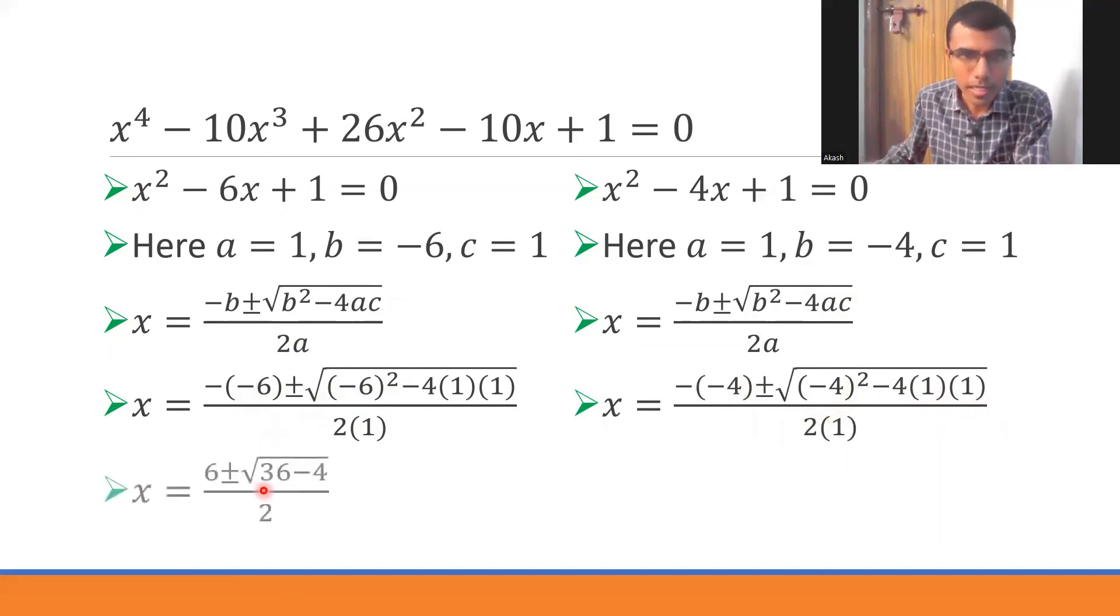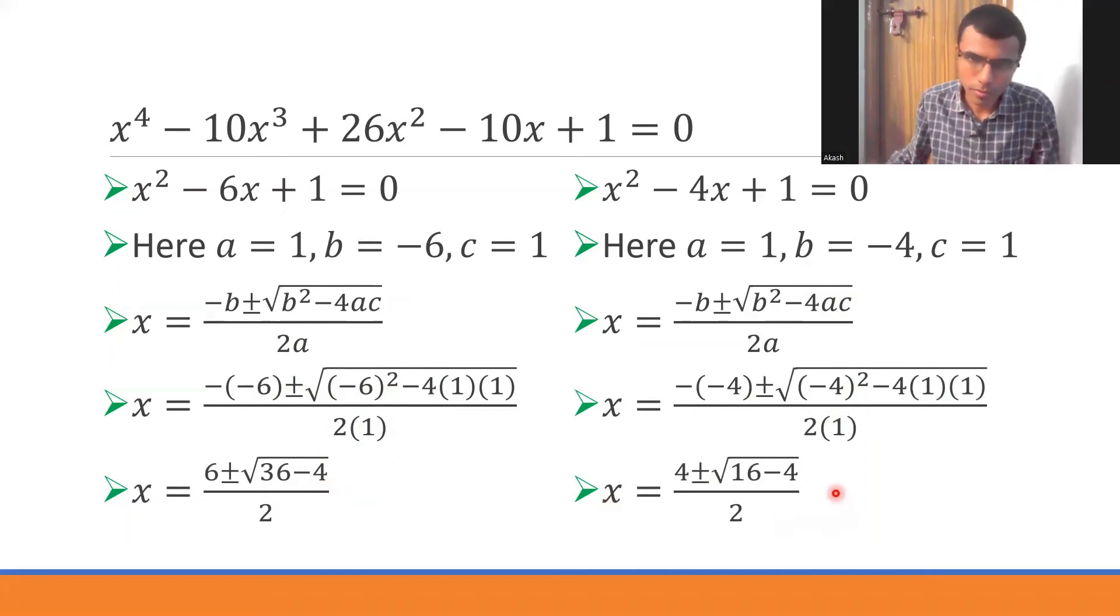So ultimately I'd be getting 6 ± √(36 - 4) here, 4 ± √(16 - 4). 36 - 4? 32. And 16 - 4? 12.